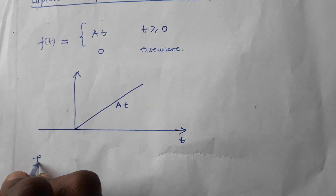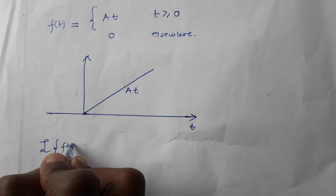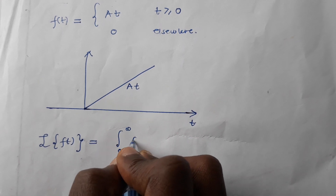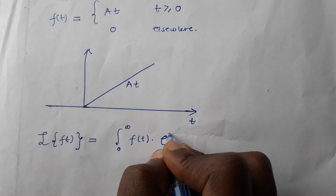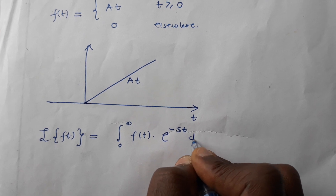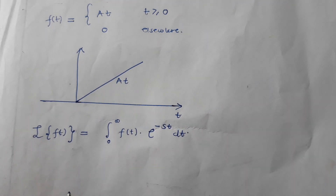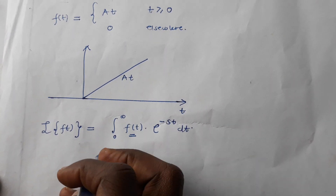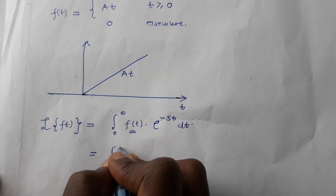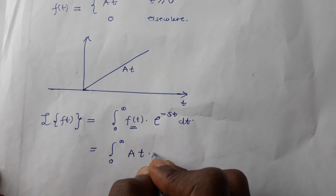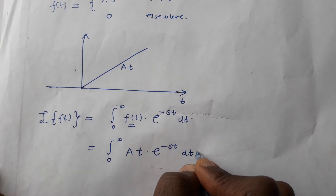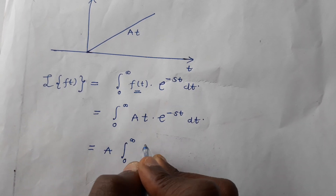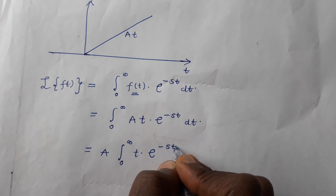From the definition of the Laplace transform, the Laplace transform of a time function is defined as the integral from 0 to infinity of the function in the time domain multiplied by e^(−st) dt. So for this ramp input, f(t) = at. Therefore, we can have the integral from 0 to infinity of at multiplied by e^(−st) dt. Since a is a constant, we can take it outside the integral sign: a times the integral from 0 to infinity of t·e^(−st) dt.